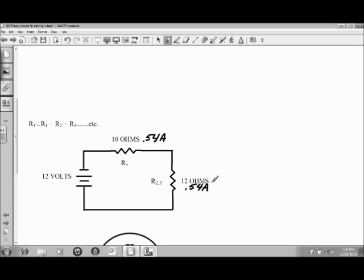The thing that we do need to calculate in this circuit is the voltage drop on R1. The voltage drop on R1 is going to be the current flow times the value of R1, or 0.54 amps times 10 ohms of resistance, which gives us a voltage drop on R1 of 5.4 volts.